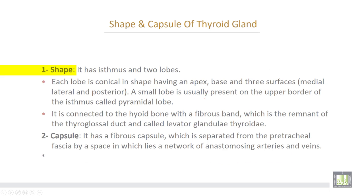Shape of the gland: it has an isthmus and two lobes. Each lobe is conical in shape, having an apex, a base, and three surfaces — medial, lateral, and posterior. A small lobe is usually present on the upper border of the isthmus, called the pyramidal lobe. It is connected to the hyoid bone by a fibrous band, which is the remnant of the thyroglossal duct, called the levator glandulae thyroideae.